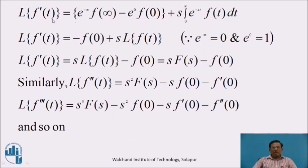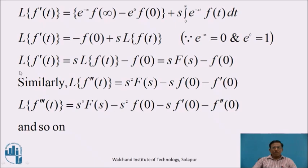Now substitute the limits on the right-hand side. We get Laplace Transform of f'(t) equal to: when t equals infinity, e^(−∞)·f(∞) minus when t equals 0, e^0·f(0), plus s times the integral from 0 to infinity of e^(−st)·f(t) dt. As we know, e^(−∞) equals 0 and e^0 equals 1. Therefore, Laplace Transform of f'(t) equals −f(0) plus s times this definite integral, which is denoted by L{f(t)}, that is F(s). Therefore, L{f'(t)} = s·F(s) − f(0).